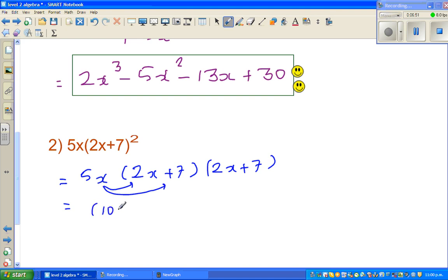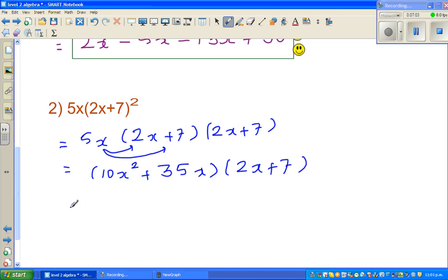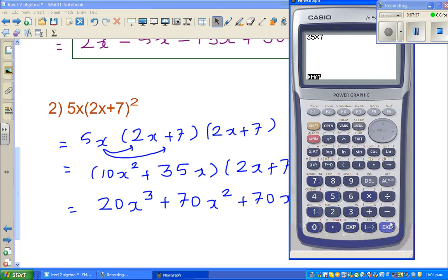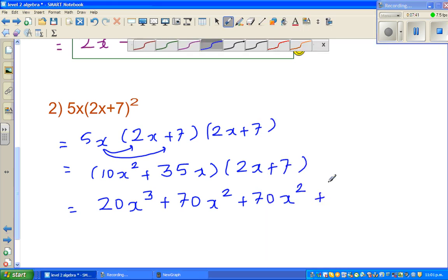So this is 10x squared plus 35x. I will be super careful this time. I don't want to do mistakes. But if I make a mistake, I can always check my answer. Now using the FOIL method: first term, 10x squared times 2x is 20x cubed. Then 10x squared times 7 is 70x squared. Then 35x times 2x is again 70x squared plus 35x times 7, which is 245.